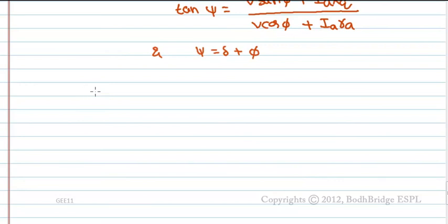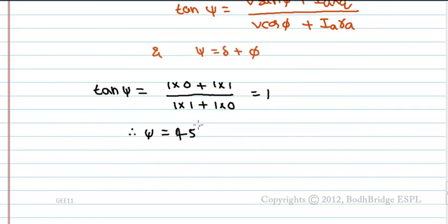Substituting the values in tan psi formula: V is 1 per unit, sin phi is 0, plus Ia 1 per unit times Xq 1 per unit, divided by 1 times cos phi which is 1, plus 1 times 0. This equals 1, therefore psi equals 45 degrees.